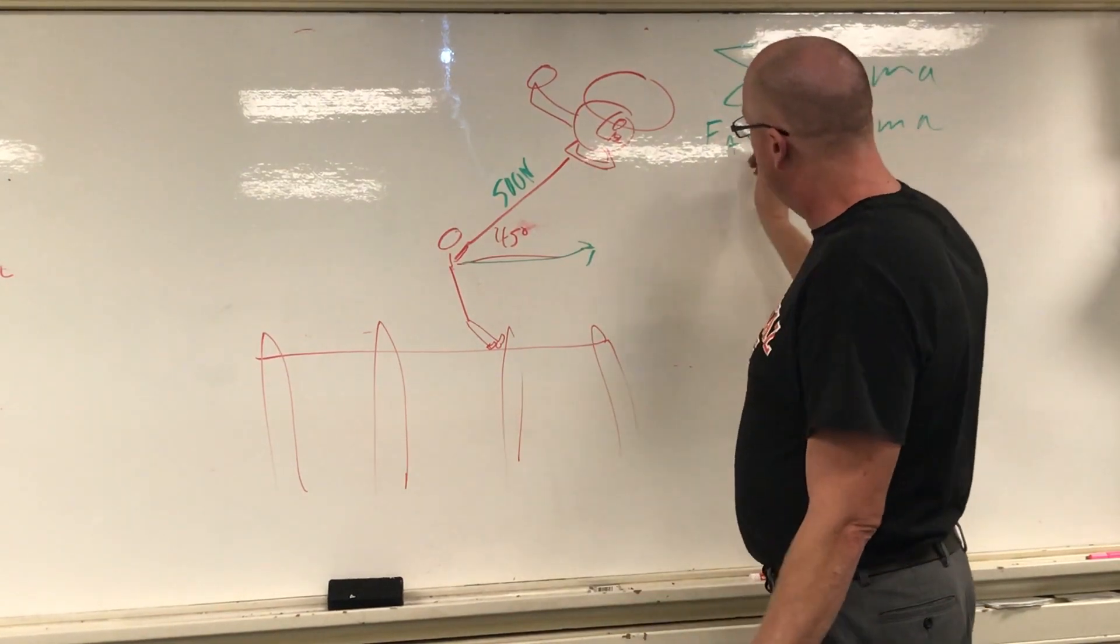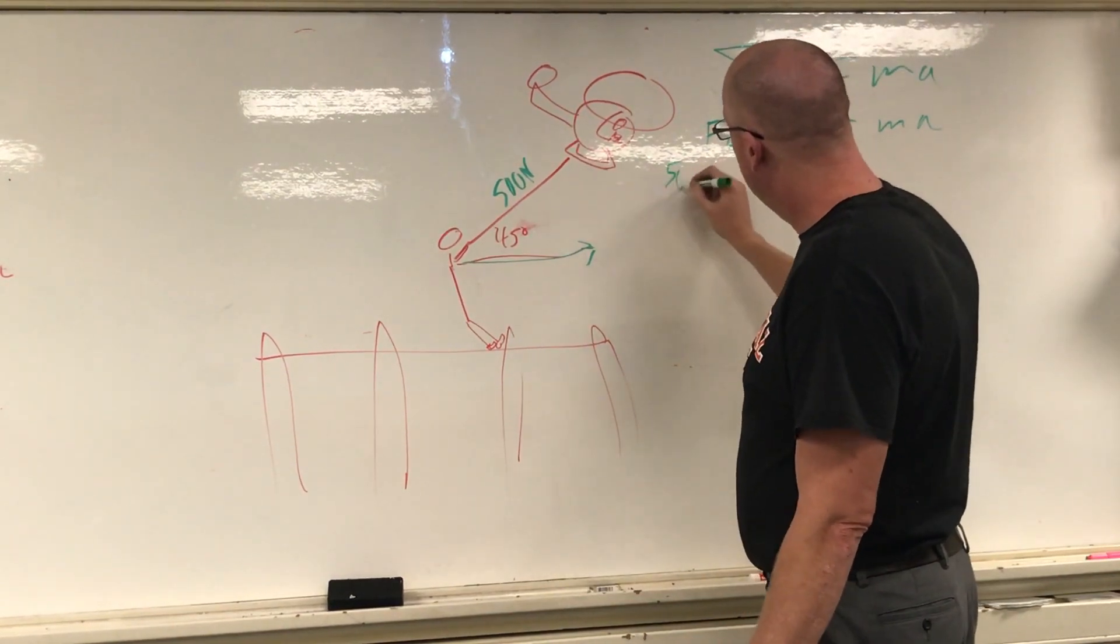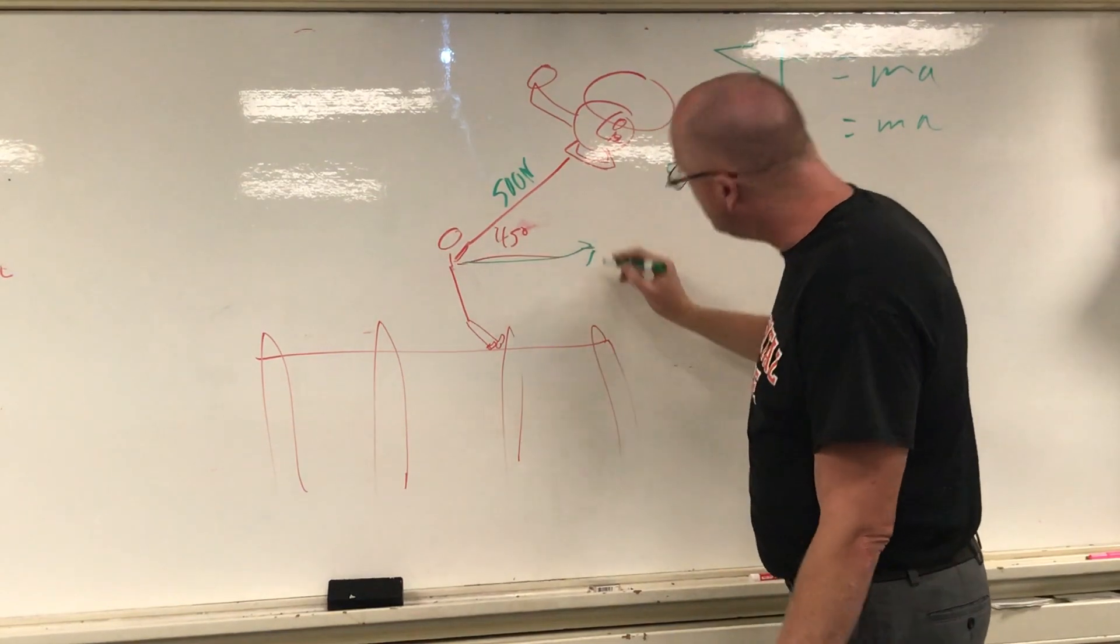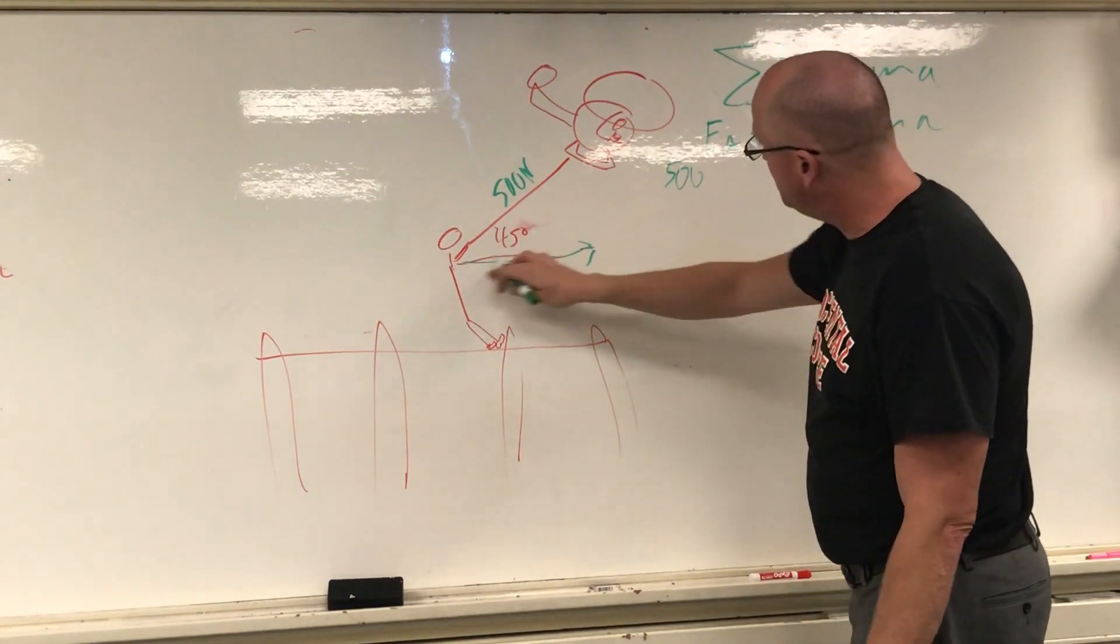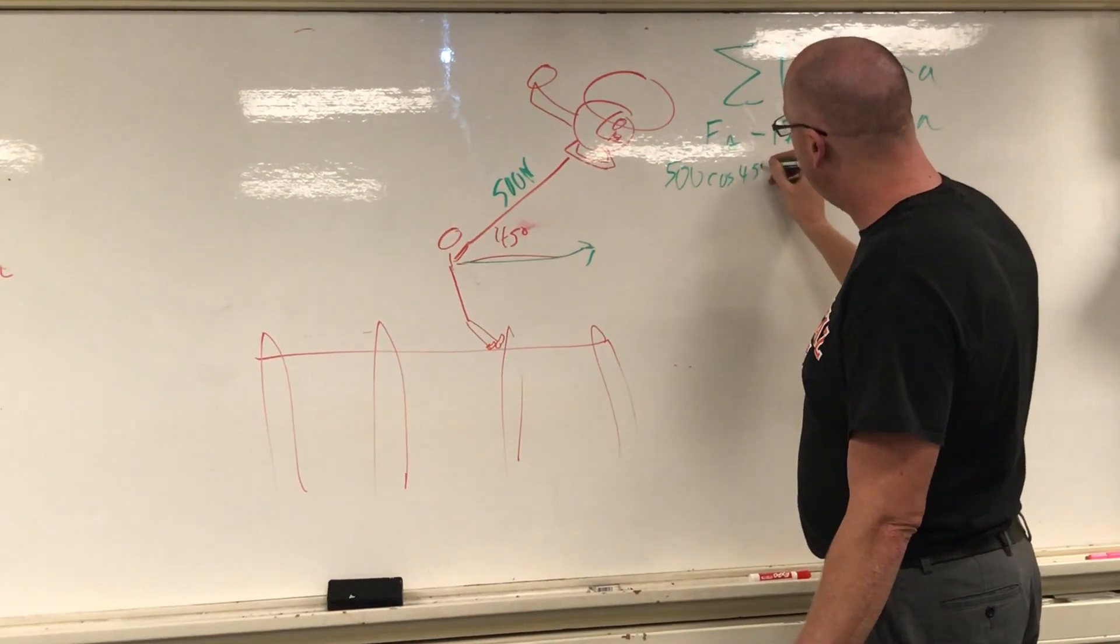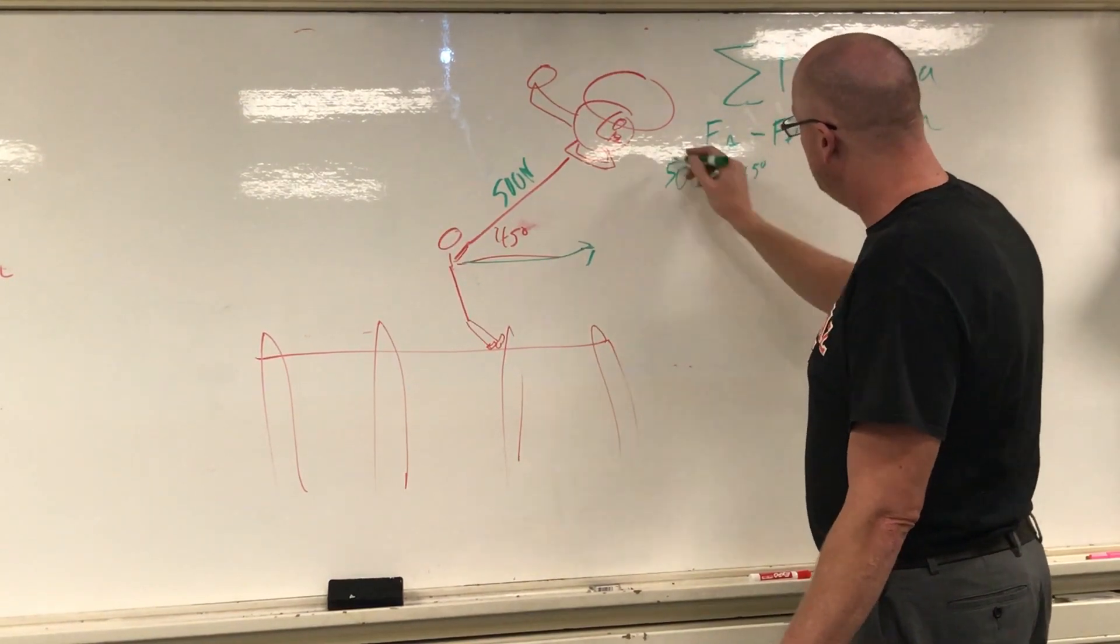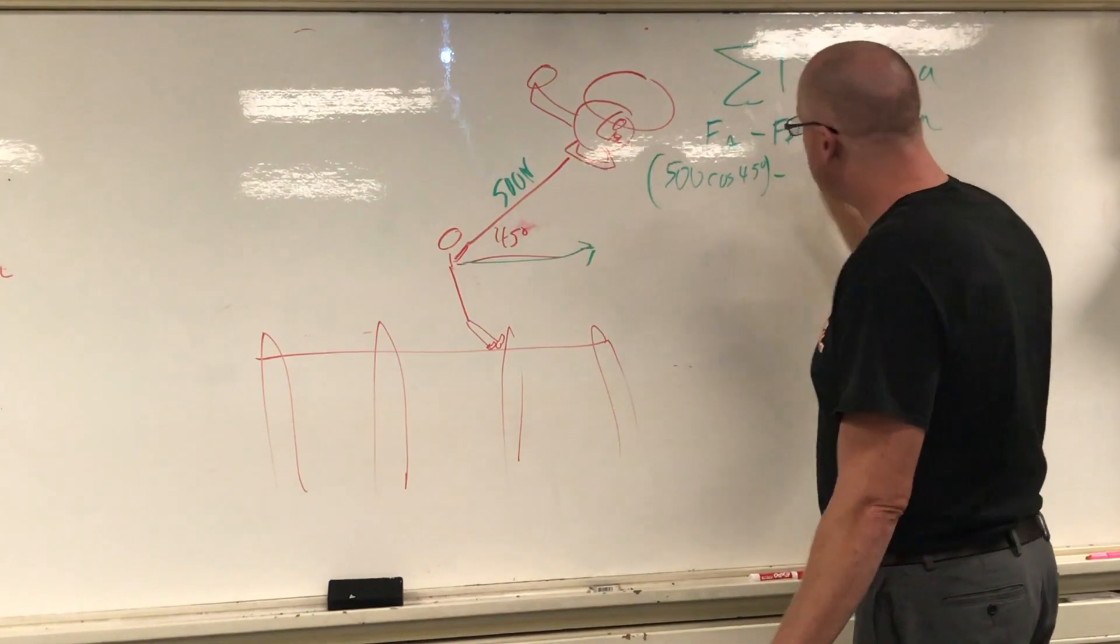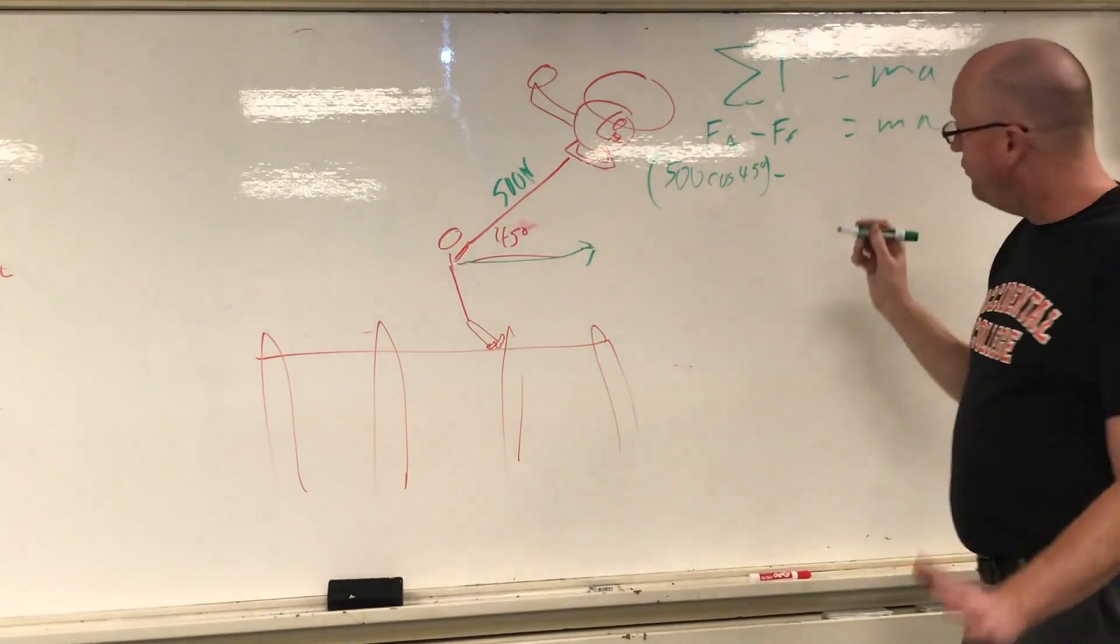Okay, so the applied force, applied force is going to be the same for all of us, by the way. 500, but only part of that is actually going to be moving you forward. So that's the adjacent side, so it'll be 500 cosine 45 degrees. So that is the applied force.